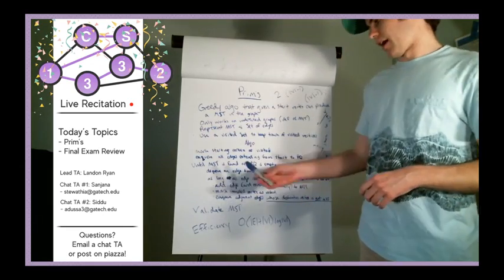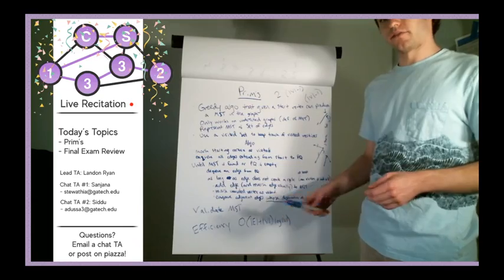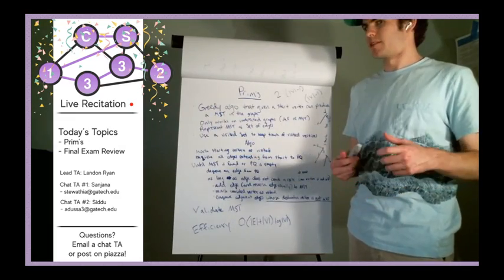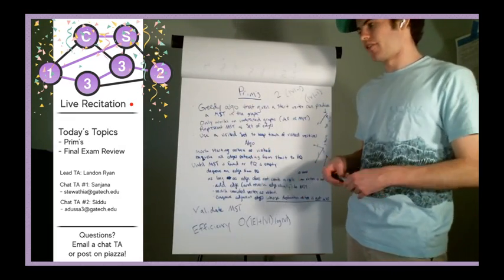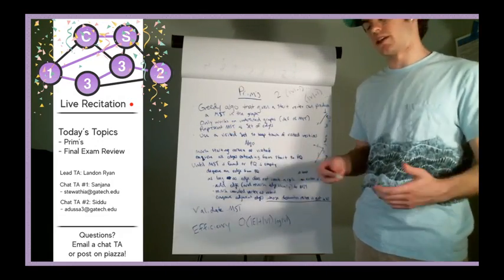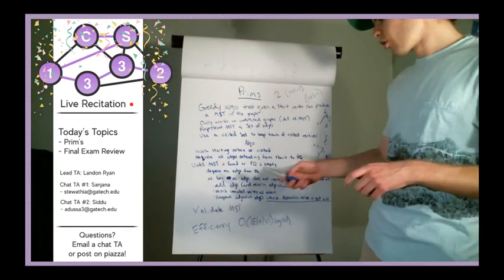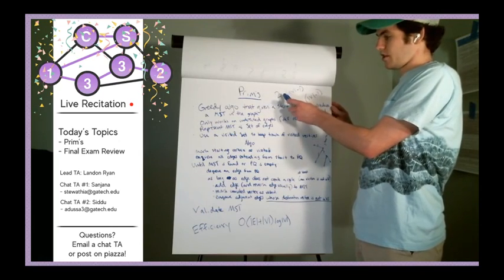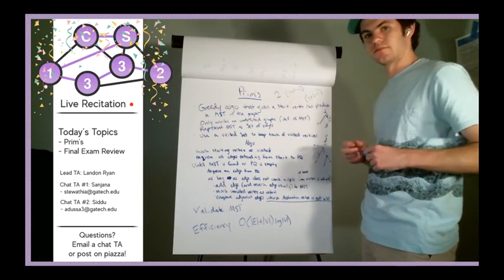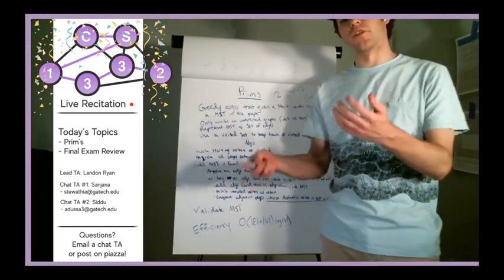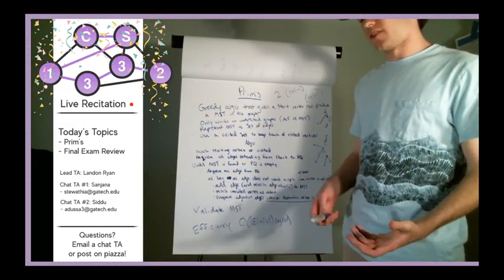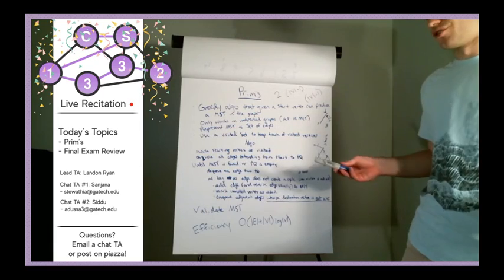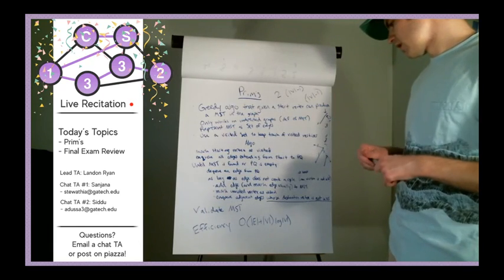After breaking out of the loop, we validate the MST. If it's a disconnected graph, we don't want to return an MST that isn't really valid. We validate by checking if the number of edges in the edge set equals two times the quantity (number of vertices minus one). If it does, we return the MST. If not, we return null — which is the implementation in our homework for 1332.